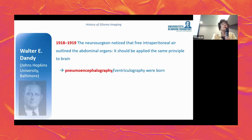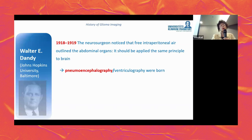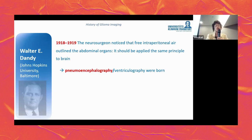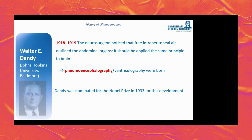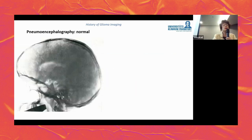Dandy transferred this observation and injected air into the subarachnoid space. Pneumoencephalography therefore became the first method in neuroradiology to delineate the brain. He was also nominated for the Nobel Prize for this observation and for developing this method.